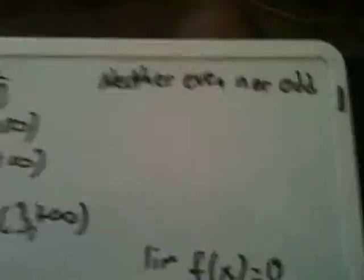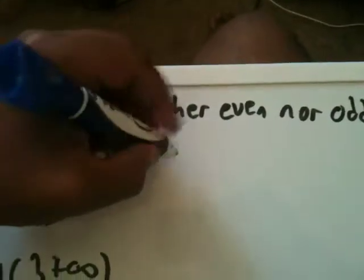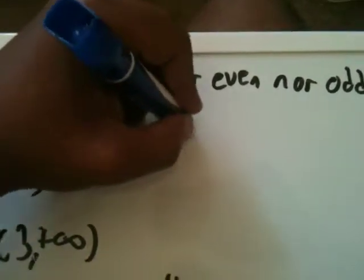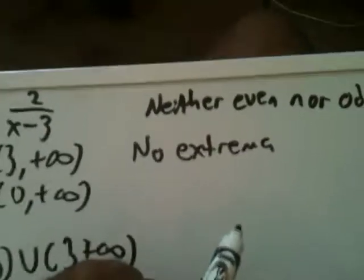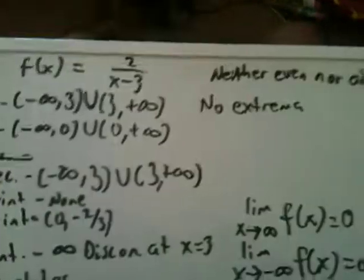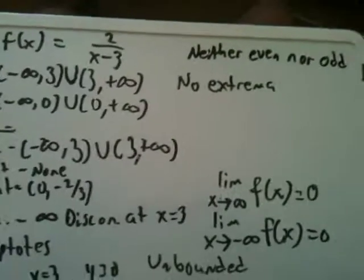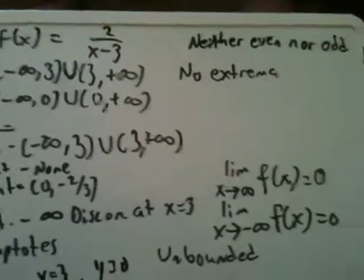Extreme values. Well, there were no extreme values, so no extrema. And extrema is the plural form of extreme. And we have just successfully analyzed this function, 2 over x minus 3. In the next video, we're going to do one more. It may look a little confusing, but you're going to get it.